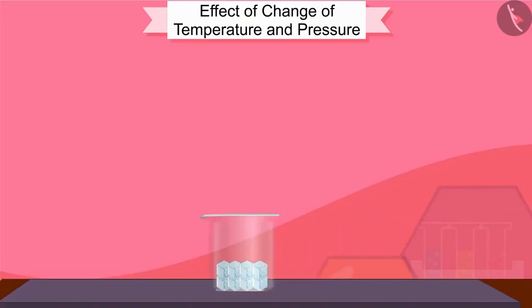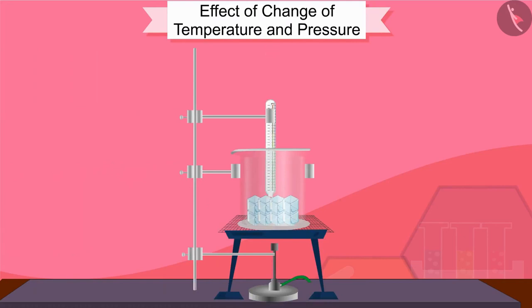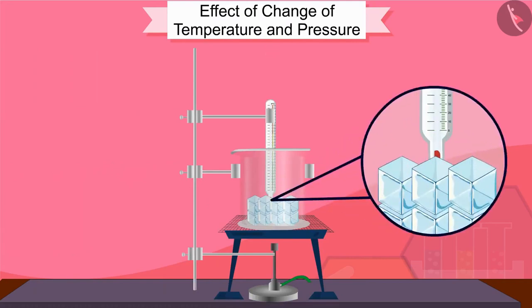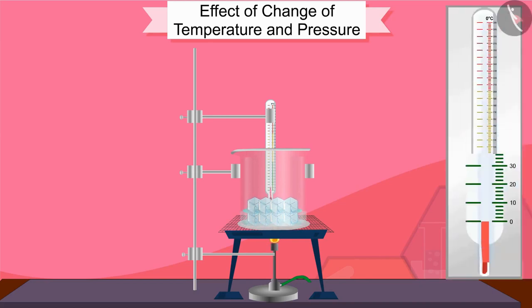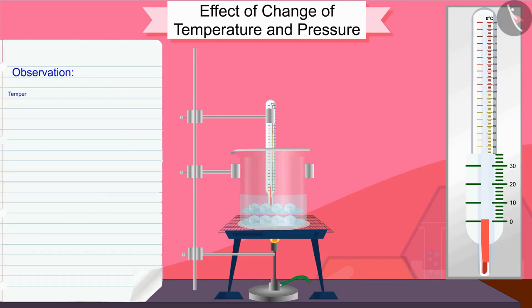Take 150 grams of ice cubes in a beaker and hang the thermometer in such a way that the bulb of the thermometer is touching the ice. Start heating the beaker on a low heat flame and note down the temperature when the ice starts melting. When the entire ice turns into water, note down the temperature again. Note down the observation in the change from solid to liquid.